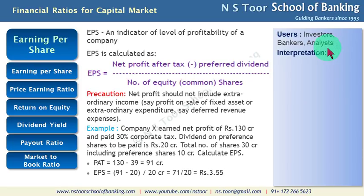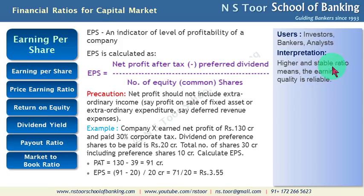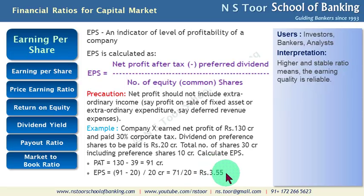How do we interpret the ratio? Higher and stable the ratio, the more reliable the earning quality. Whenever this ratio increases and remains stable, it speaks volumes about the earning quality of the company.